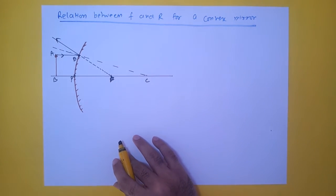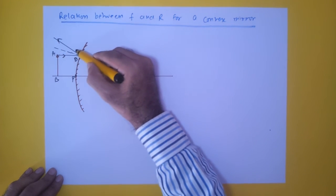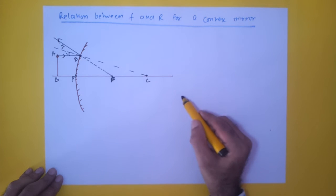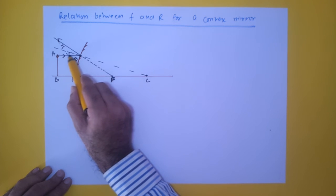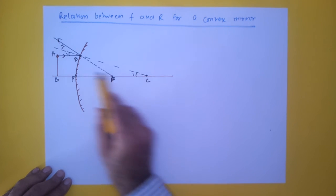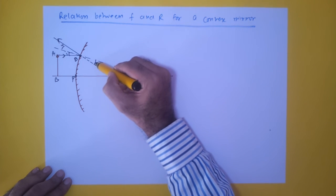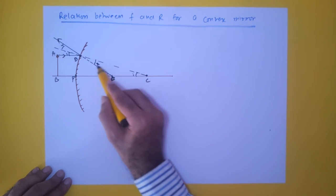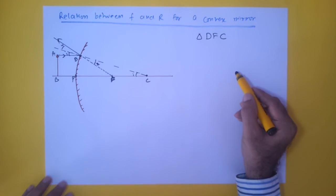Just as before, the line joining the center of curvature to the mirror is the normal. So this gives us the angle of incidence and angle of reflection at point D. Using the same geometric argument — AD and PC are parallel lines — the alternate angle is also I. The vertically opposite angles give us R, consistent with the reflection condition.